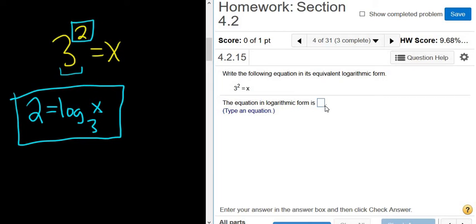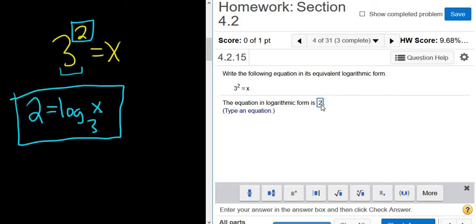So to type it in, let's try it. So it's 2 equals, I'm going to type in log. Now I want to get an underscore. So you could hit this key here and that would give you the underscore.